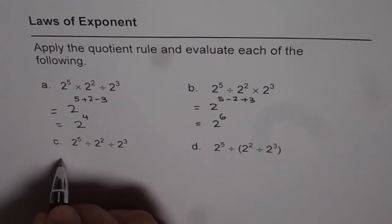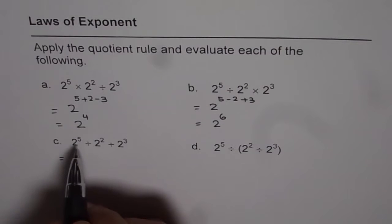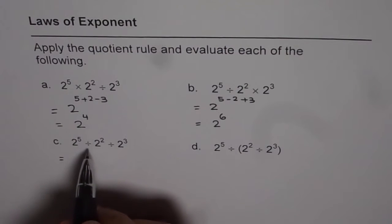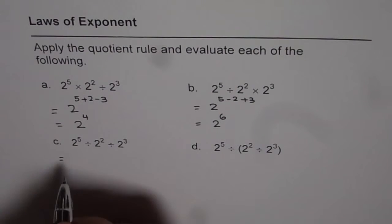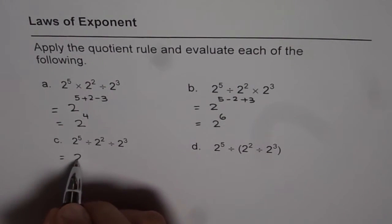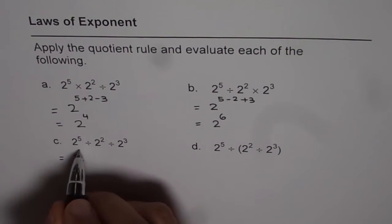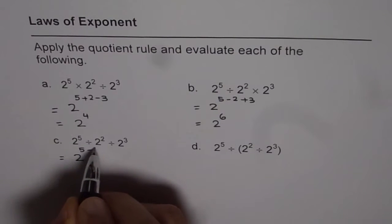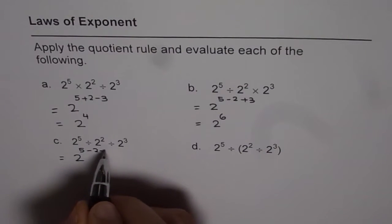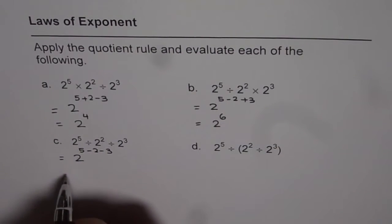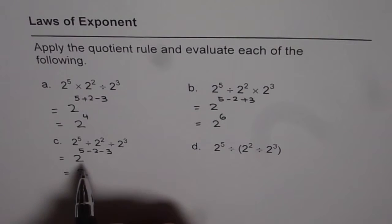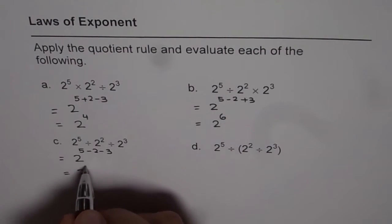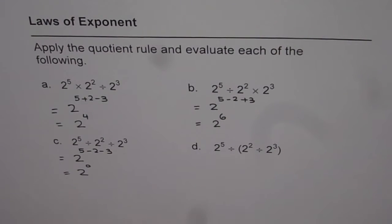Part C: 2 to the power of 5 divided by 2 squared divided by 2 cubed will result in 2 to the power of 5 minus 2 minus 3. That is 2 to the power of 3 minus 3, which is 0. So the answer is 2 to the power of 0.